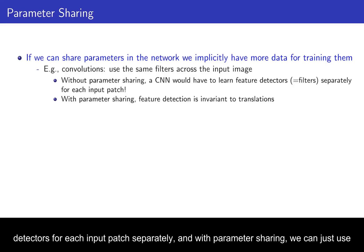And with parameter sharing, we can just use one filter, one of these feature detectors, and use it for every input patch. And that gives us invariance to translations, and it also gives us just more data for learning these filters, because every input patch actually gives us information for these filters and for the weights in these filters.